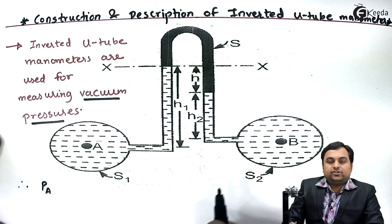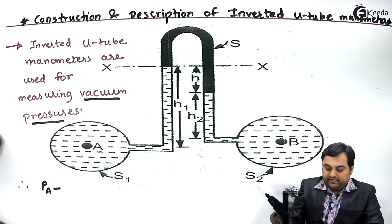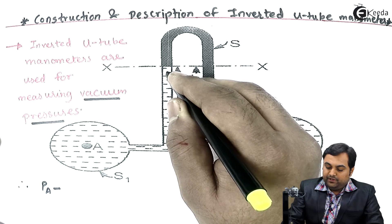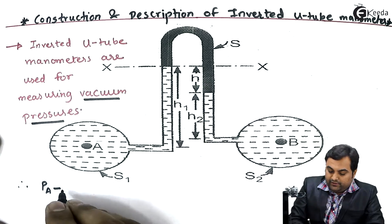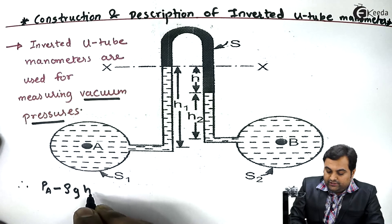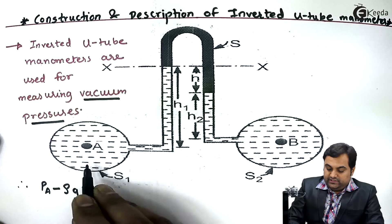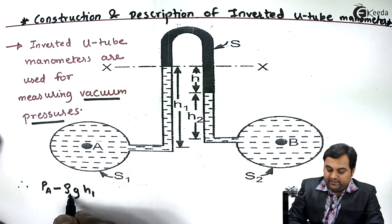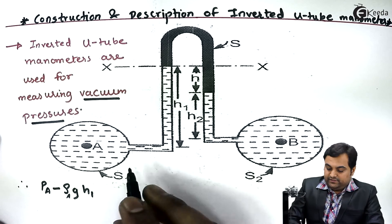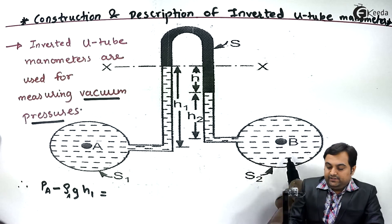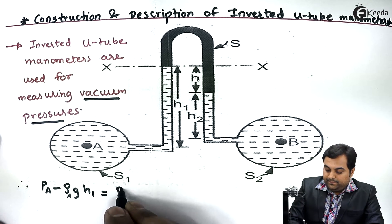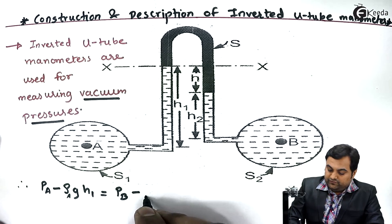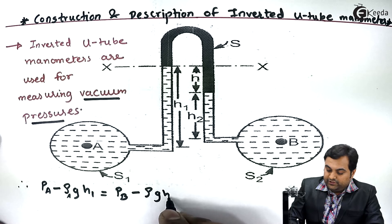Instead of adding, we would be subtracting — that is, minus the pressure due to the left limb column h1, so that will be rho_a × g × h1, where this density is of the fluid inside pipeline A. Next, for the right-hand side, we have pressure in pipeline B minus h2, the height of the fluid, so this would be rho_b × g × h2.